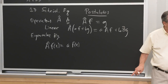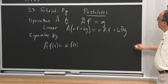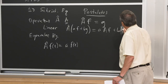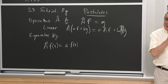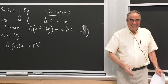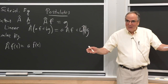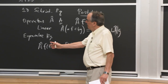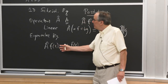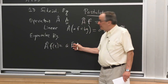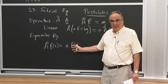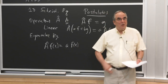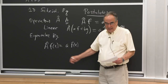A function is special as an eigenfunction because when the operator operates on it, it returns the function times a number — the eigenvalue. We like these. Almost all of quantum mechanics is expressed in terms of eigenvalue equations.